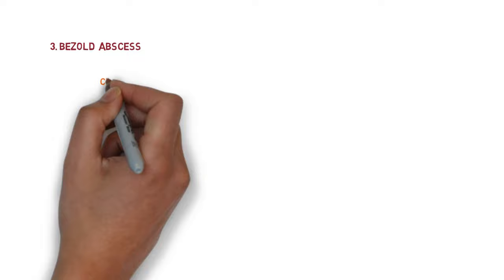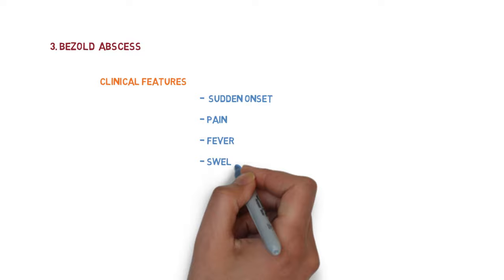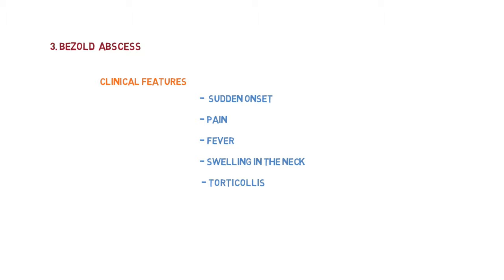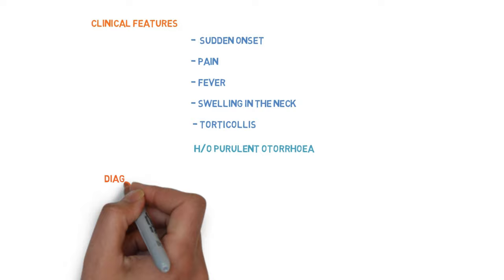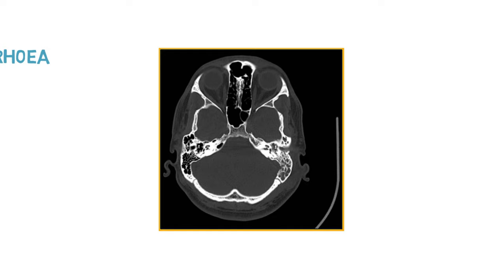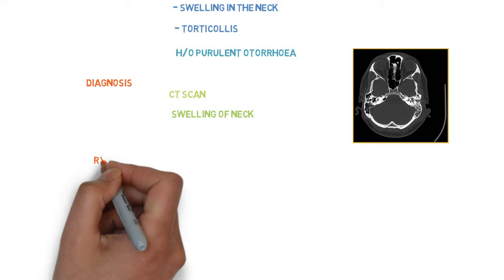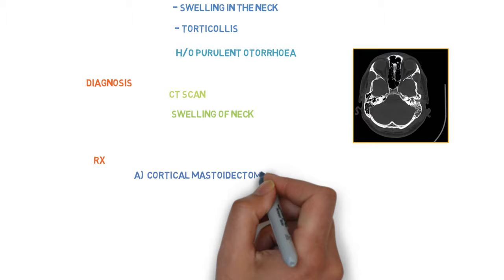The clinical features of Bezold's abscess include sudden onset, pain, fever, tender swelling in the neck, and torticollis. The most commonly observed feature is that the patient gives a history of purulent otorrhea. Diagnosis is by CT scan, which shows thick collection in the middle ear cavity and mastoid air cells with bony erosion and swelling of the neck. Treatment is cortical mastoidectomy and drainage of the neck abscess through a separate incision, followed by intravenous antibiotics.